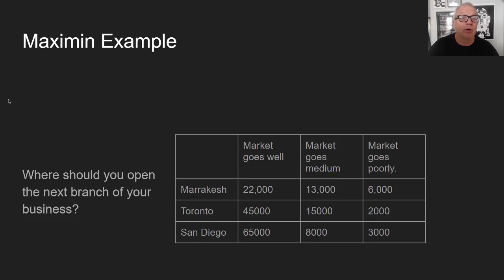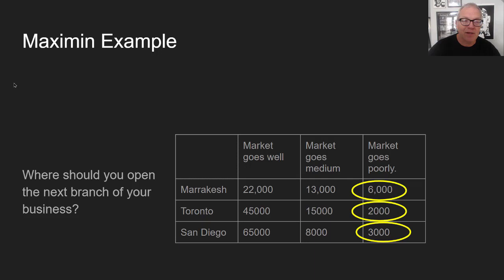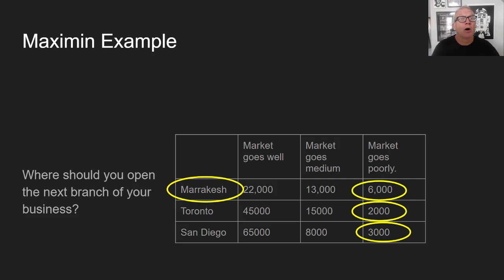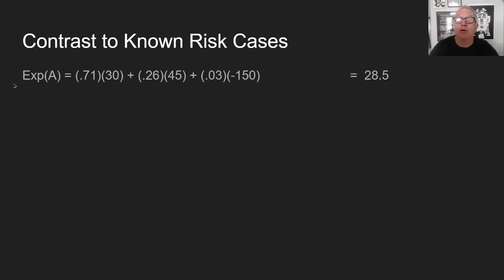Applied to the restaurant case, the worst outcome under fish is 1, under hamburger is 3, and under skipping dinner is 2. So maximin says choose the hamburger — it's the best worst choice. Now consider where to open the next branch of your business: Marrakesh, Toronto, or San Diego, with three possible market states. The worst outcomes are $6,000 in Marrakesh, $2,000 in Toronto, and $3,000 in San Diego. Maximin says choose Marrakesh, even though San Diego offers the highest upside if the market goes well.